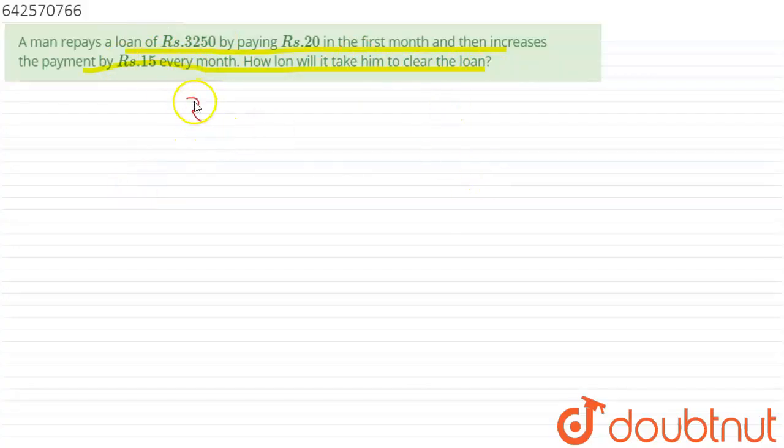That our total loan is 3250, and he pays rupees 20 in the first month, so our a is equal to 20. And then he increases the payment by 15 rupees, so d will be equal to the common difference of the AP, that will be equal to 15.